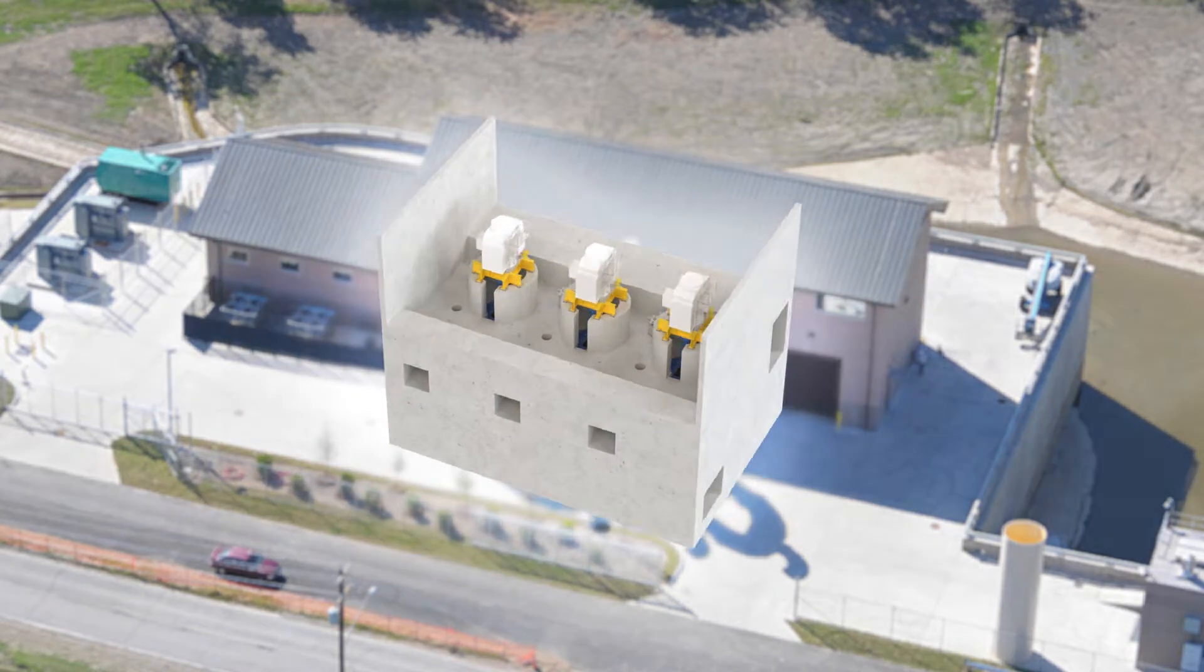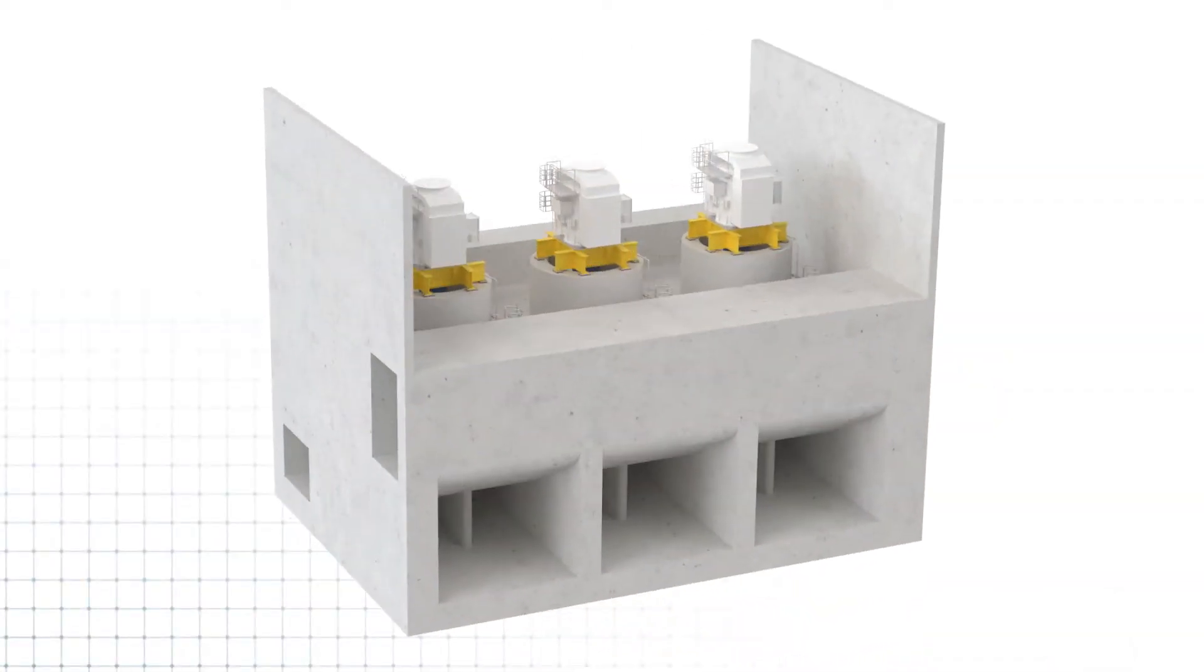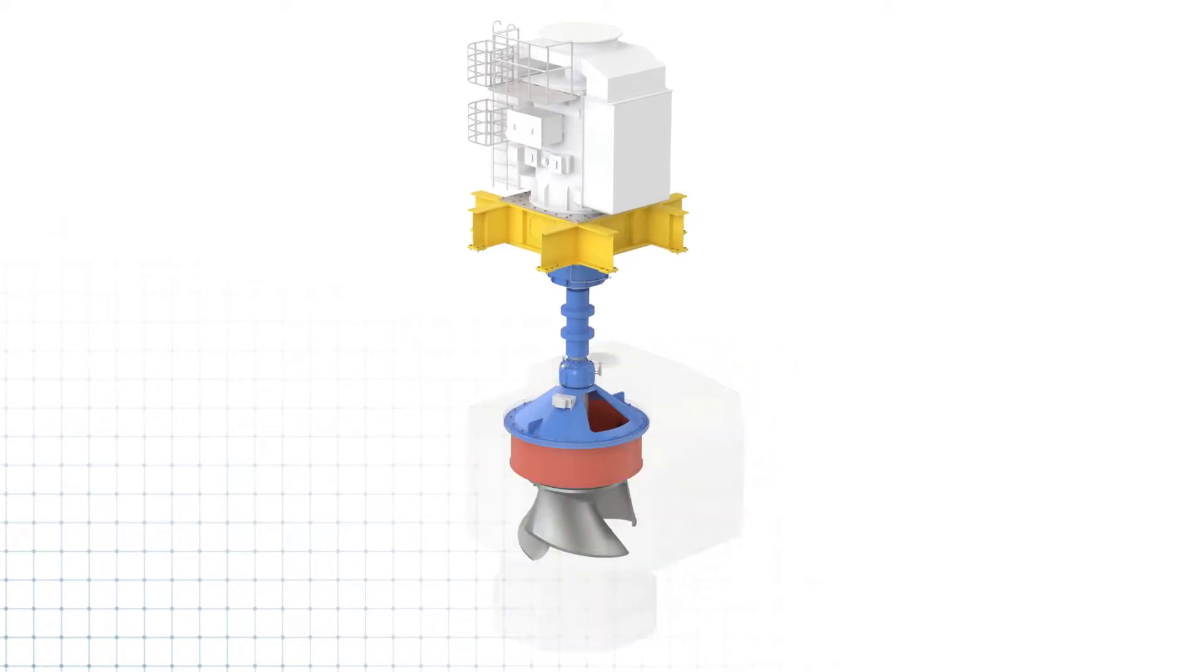Able to pump up to 800,000 gallons of water per minute, FlowServe CVP concrete volute pumps are the backbone of today's major flood control systems.